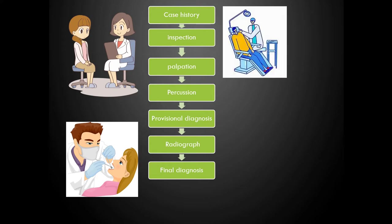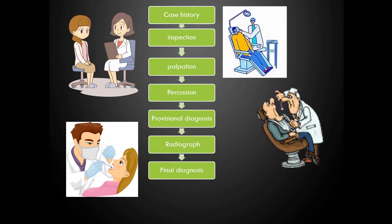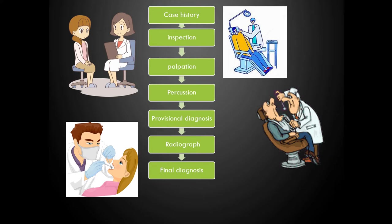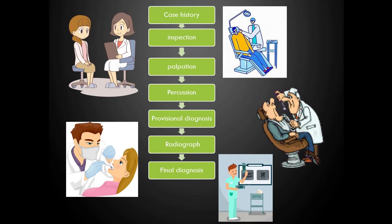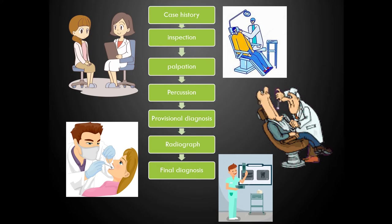The first step is inspection, next is palpation, and then percussion. After these three steps, we will be arriving at the provisional diagnosis. Once the provisional diagnosis is given, we will take an IOPA radiograph and then correlate the clinical findings with the radiographic findings to arrive at the final diagnosis.